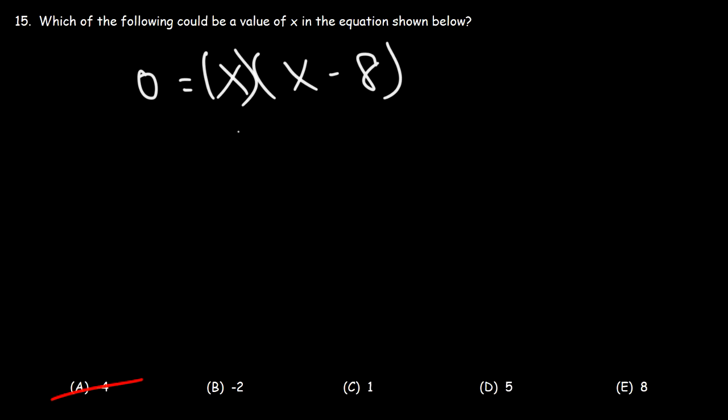Now, what we're going to do is set each factor equal to 0. So we have x is equal to 0. And if you set x minus 8 equal to 0, when you solve it, you'll get x is equal to 8.